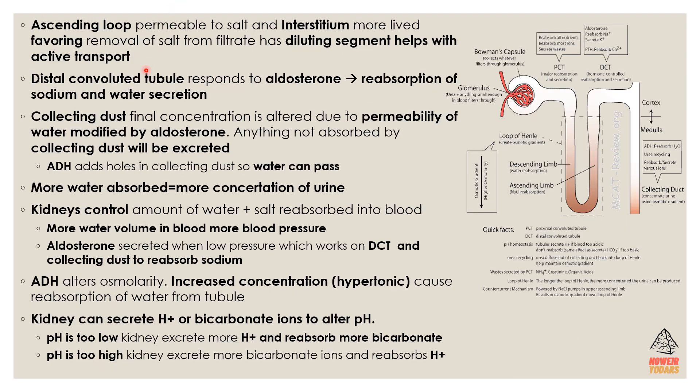The ascending loop of Henle is permeable to salt. The interstitium is more dilute, favoring removal of salt from the filtrate. The ascending loop also has a diluting segment that helps with active transport.